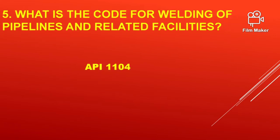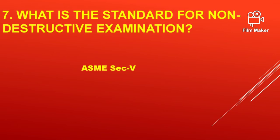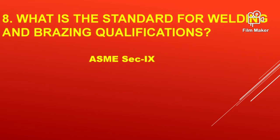What is the code for welding of pipelines and related facilities? API 1104. What is the standard for welding rods, electrodes and filler metals? ASME Section 2 Part C. What is the standard for non-destructive examination? ASME Section 5. What is the standard for welding and brazing qualifications? ASME Section 9.